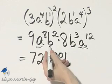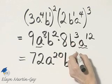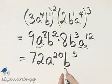And then B raised to the power of 2 plus 3, or 5. And now I can go no further. My product is 72, A to the 20th, B to the 5th.